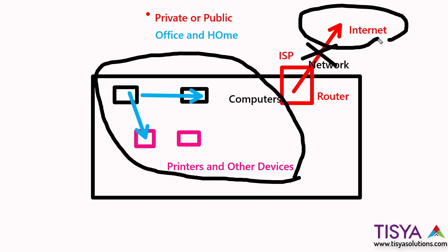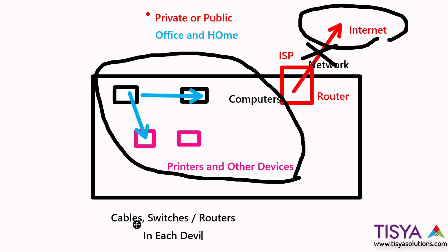The purpose of a network is to enable communication between devices. There are various components within a network to understand. Typically, when setting up a network, you have physical cables which form the media through which communication happens. You also have switches and routers which connect devices further. Each device connected to the network has a network interface card, or NIC.